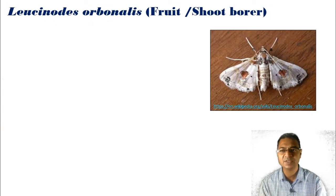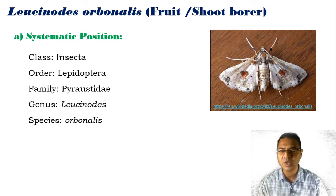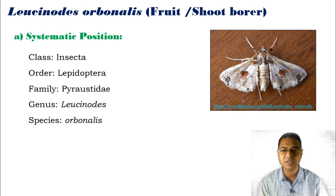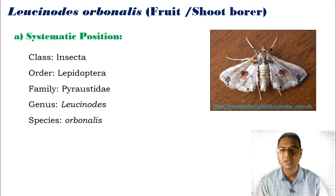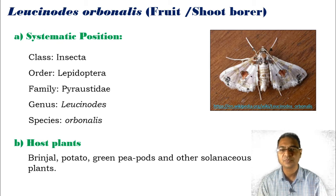This is the adult stage of the fruit or shoot borer. Moving toward the systematic position: Phylum Arthropoda, Class Insecta, Order Lepidoptera — which includes butterflies and moths — Family Pyralidae, Genus Leucinodes, Species orbonalis. The host plants where Leucinodes orbonalis attacks include especially brinjal, potato, green pea pods, and other solanaceous plants.